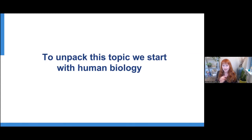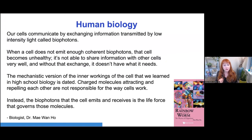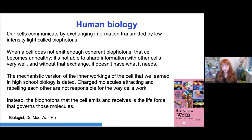Before we unpack that big topic, we're going to start with human biology. I'm going to read to you from biologist Dr. Mae Wan Ho. It's covered in her book, The Rainbow and the Worm: The Physics of Organisms. She says: 'Our cells communicate by exchanging information transmitted by low intensity light called biophotons. When a cell does not emit enough coherent biophotons, that cell becomes unhealthy. It's not able to share information with other cells very well. And without that exchange, it doesn't have what it needs.' The mechanistic version of the inner workings of the cell that we learned in high school biology is dated. The biophotons that the cell emits and receives is the life force that governs those molecules.